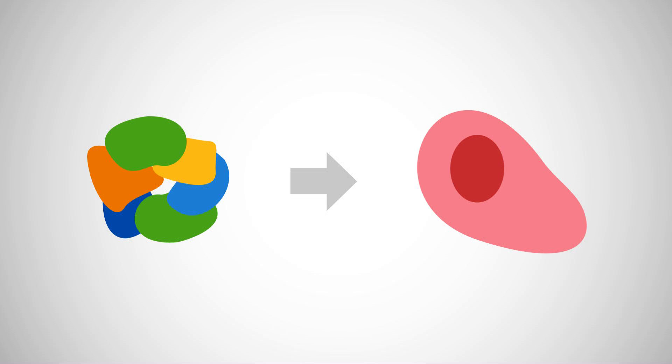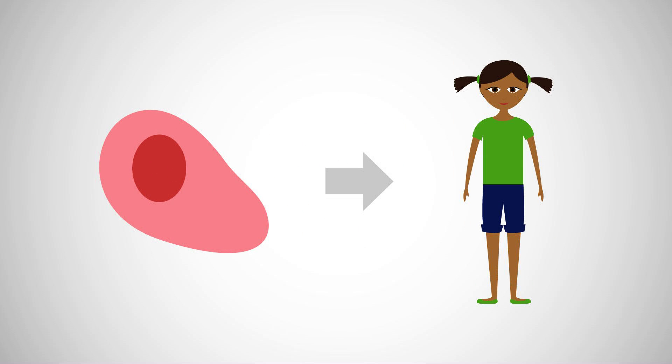Amino acids form proteins. Proteins form living cells, and living cells make up your entire body.